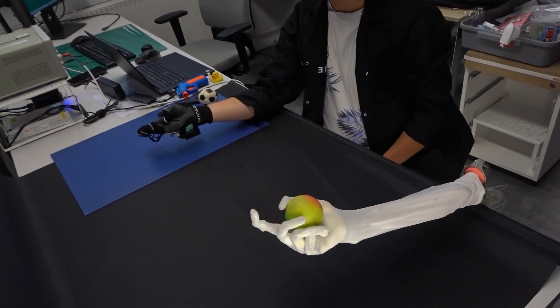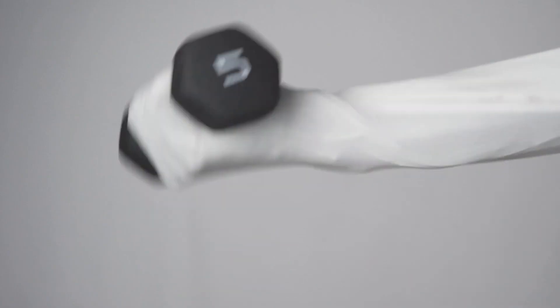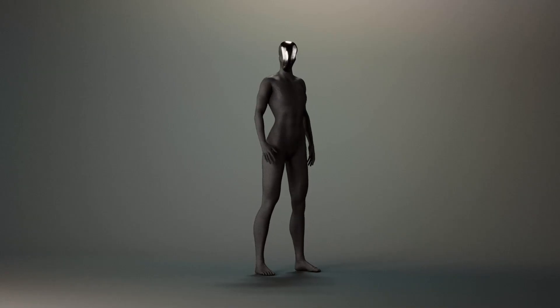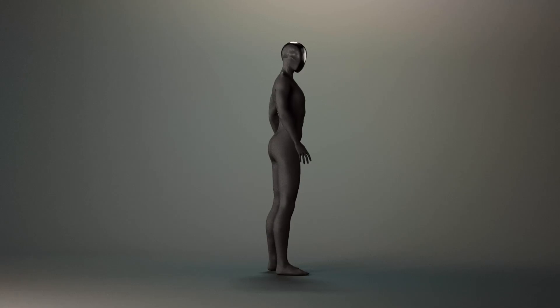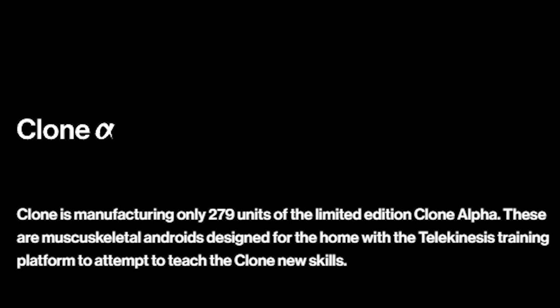The robot is also designed to interact with humans in meaningful ways. It can engage in witty dialogue, shake hands, and even hold items for you. For those looking to customize their robot's capabilities, Clone Alpha includes a platform called telekinesis, which allows users to teach it new skills.